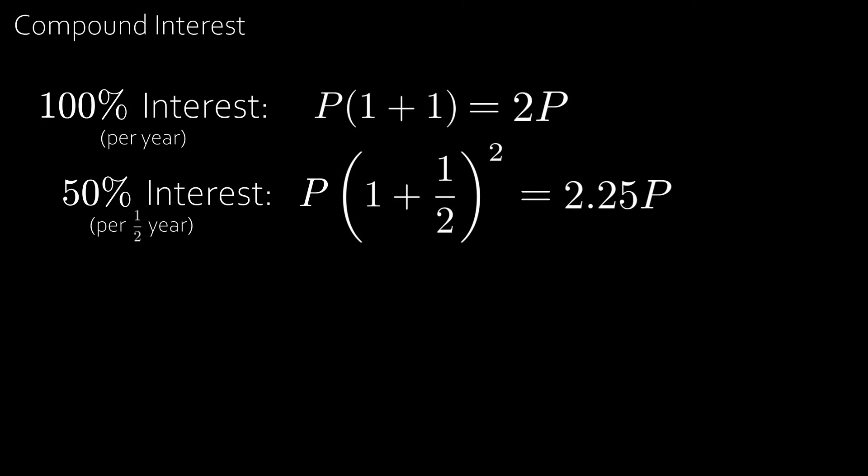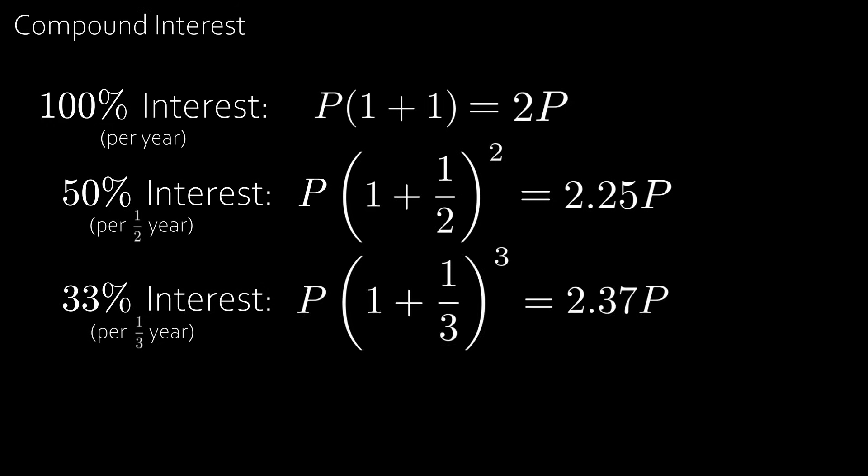Now what about 33% interest every one third of the year, or every four months? We can do the same thing and see that at the end of the year we end up with P times (1 + 1/3)³, which is equal to 2.37 times P.